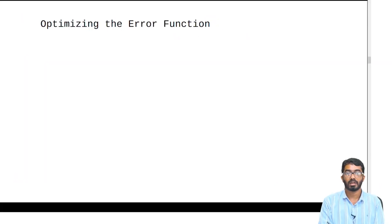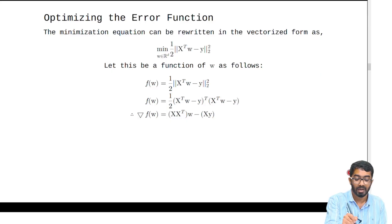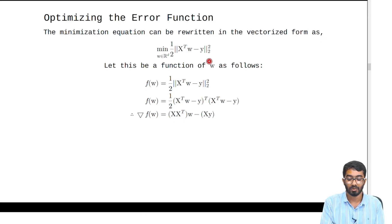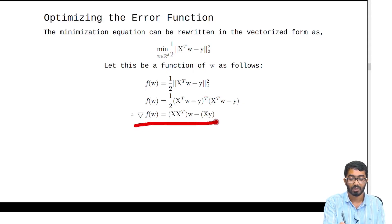The least squares regression closed form solution is given by optimizing the error function itself. We try to minimize the error function with respect to w. This function can be written in terms of w as follows, and when we take the gradient with respect to w, we finally get this equation.